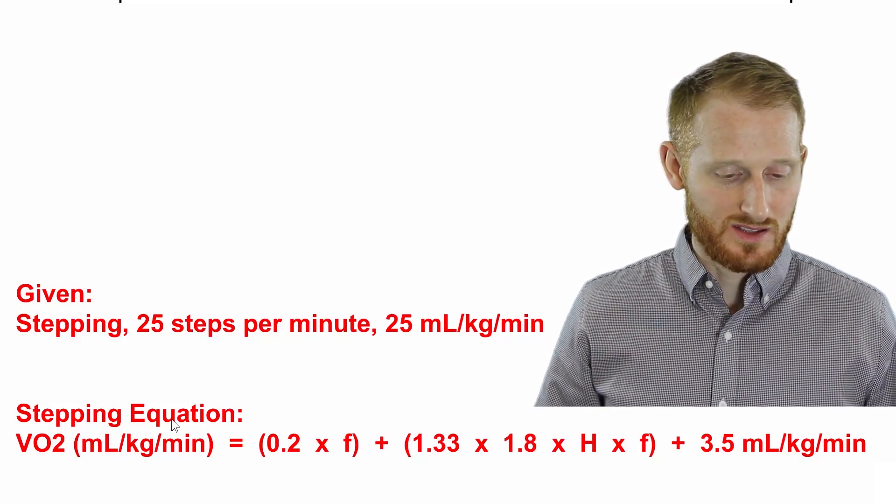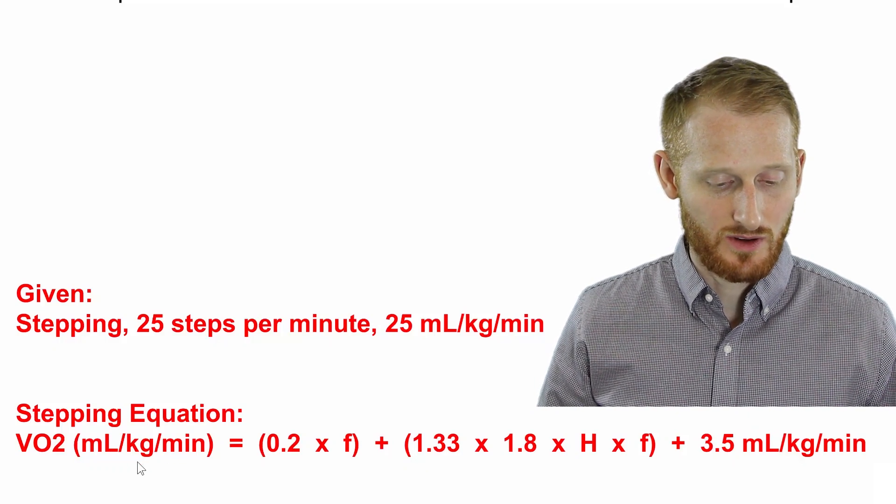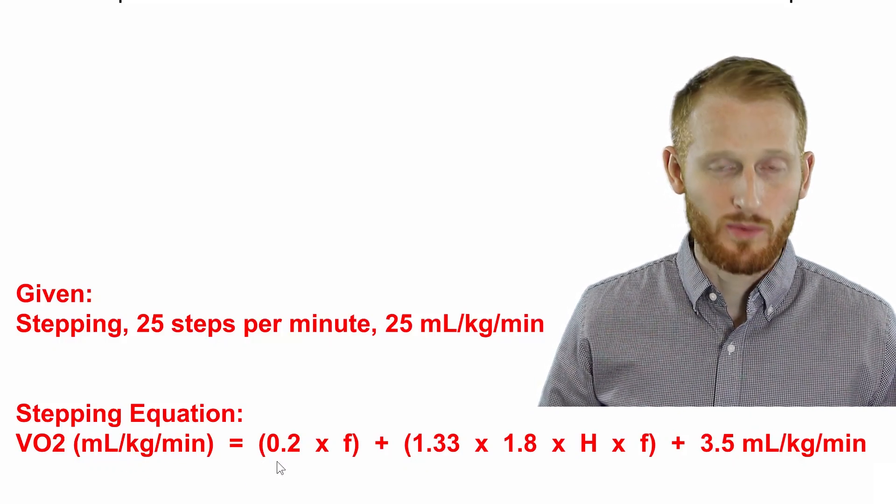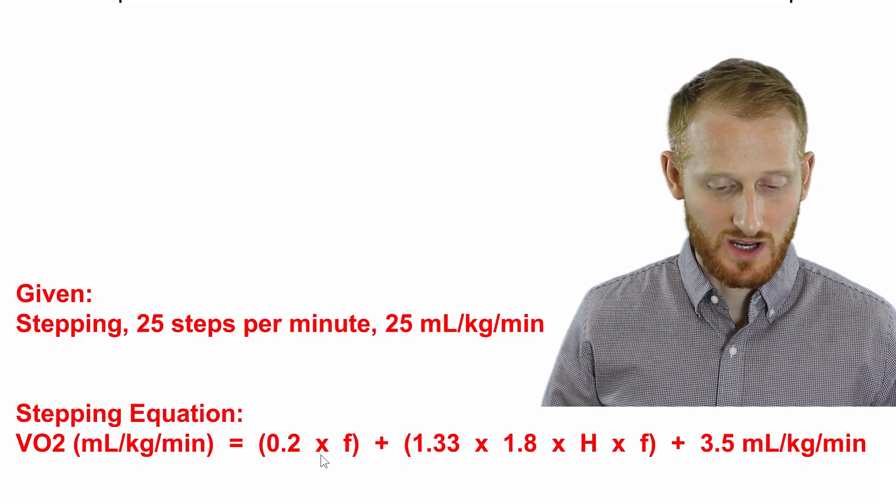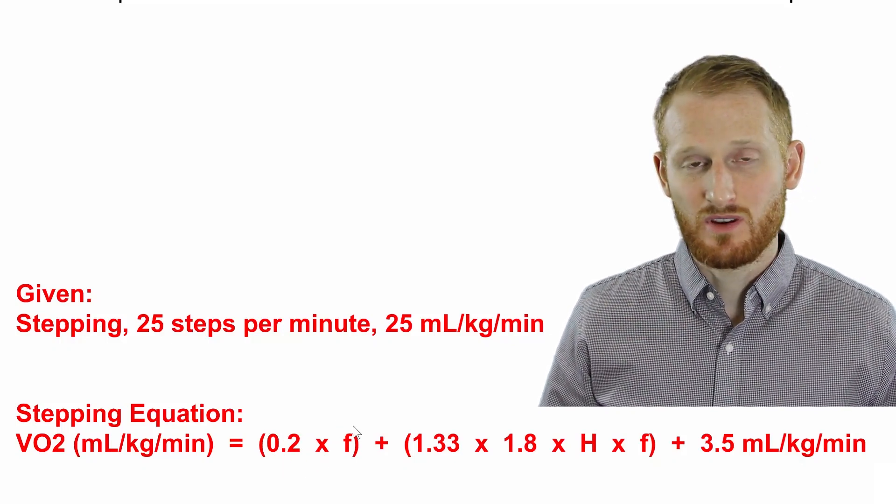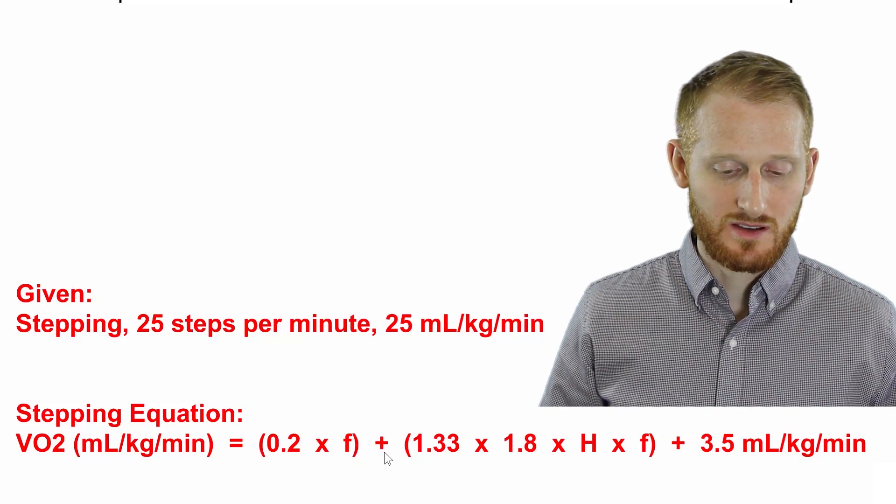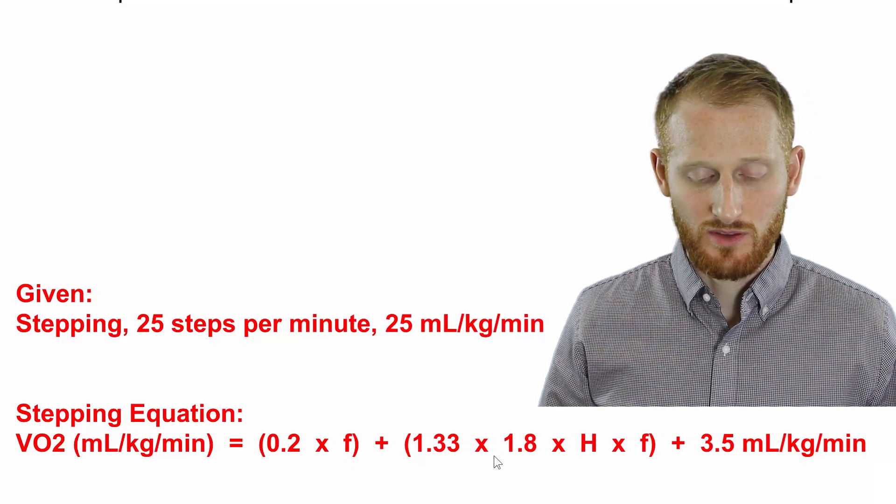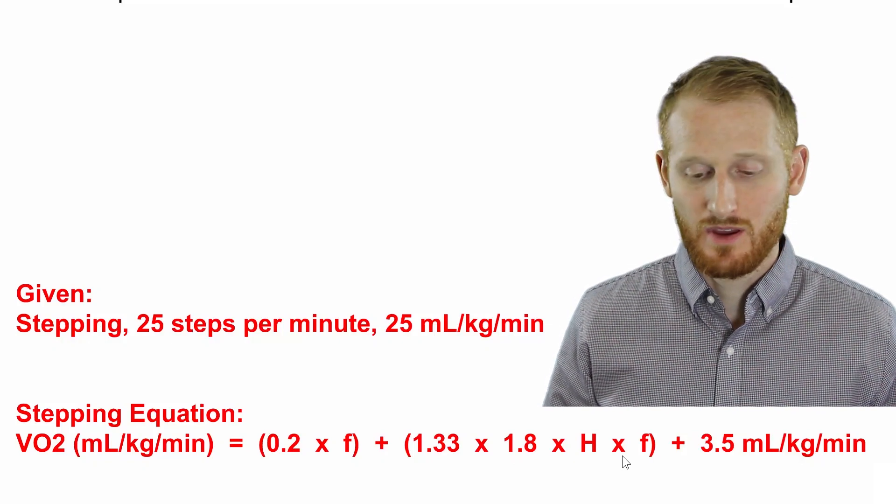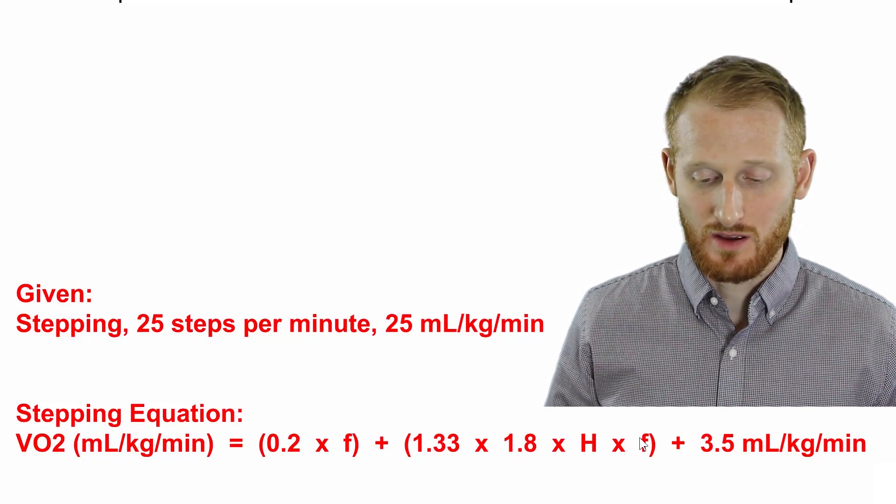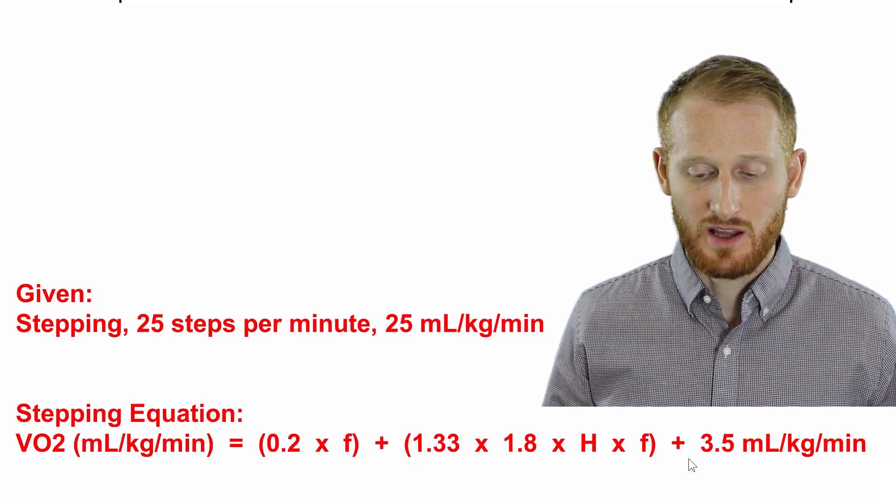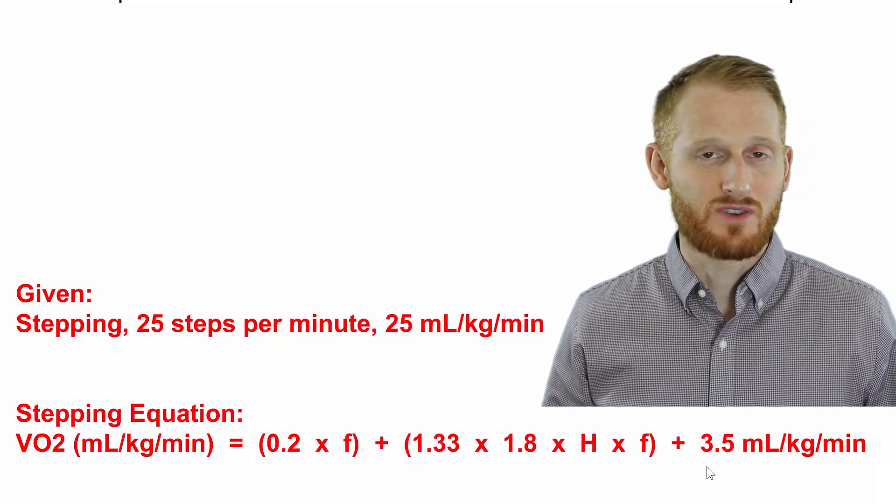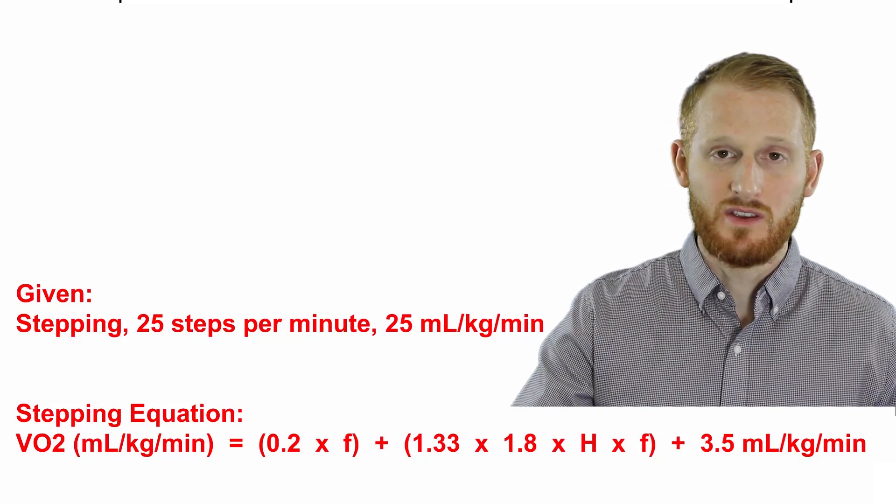So the stepping equation is VO2 in relative terms, so mL per kg per minute, equals (0.2 times the frequency of the stepping), plus (1.33 times 1.8 times the height of the step times the frequency of the stepping), plus 3.5 mL/kg/min. And that 3.5 represents the resting components of this exercise.